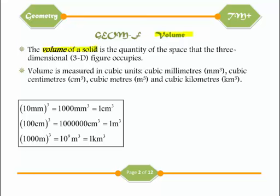The volume of a solid is the quantity of space that the three-dimensional figure occupies. Volume is measured in cubic units — cubic millimetres, cubic centimetres, cubic metres, and cubic kilometres. These conversions are provided in your textbook and are also covered in Transition Mathematics 1.